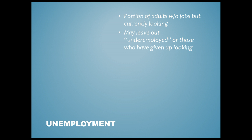Unemployment is the portion of adults without jobs who are currently looking for jobs. The BLS literally calls people and asks whether they've applied for a job within the last month. However, there are limitations: underemployed people — those with part-time jobs who want full-time work — and discouraged workers who have stopped looking after a long period of unemployment, like many experienced around 2008, don't get counted. So there can be some interference in those numbers.